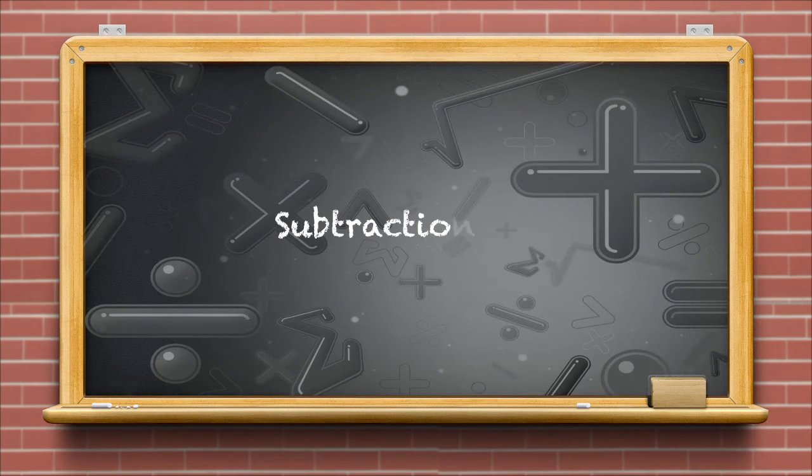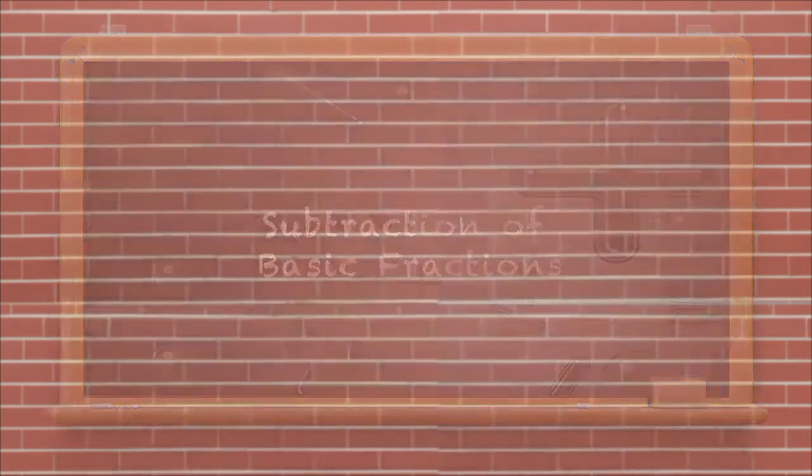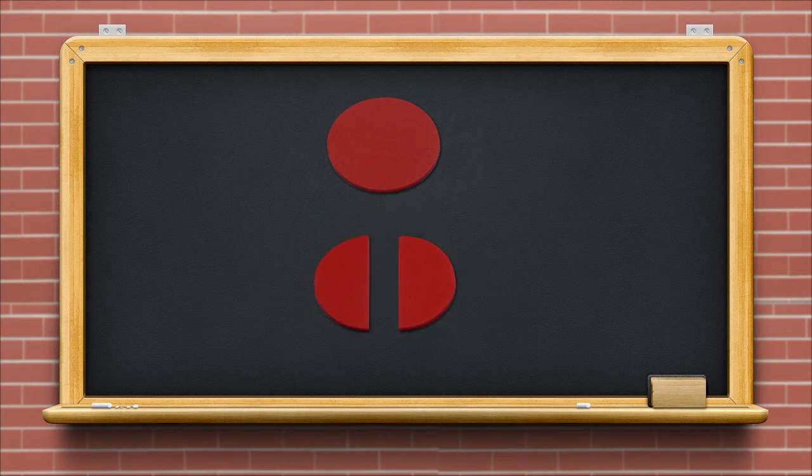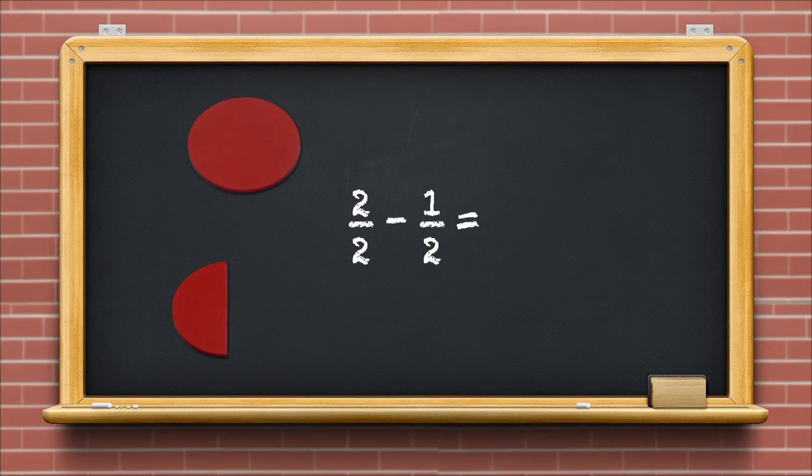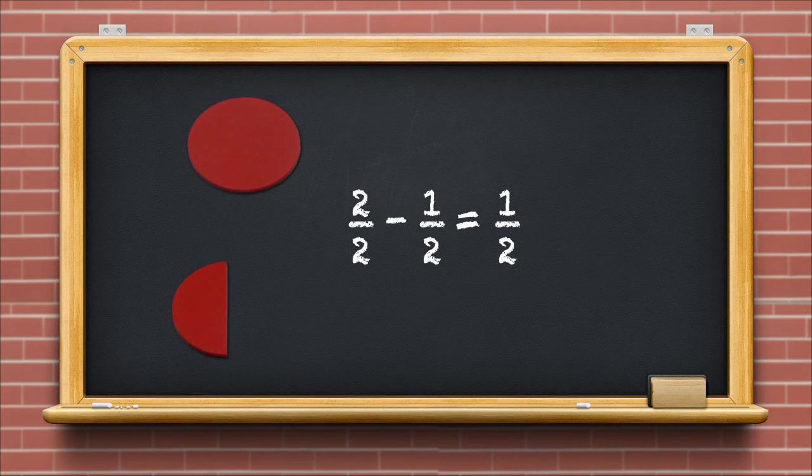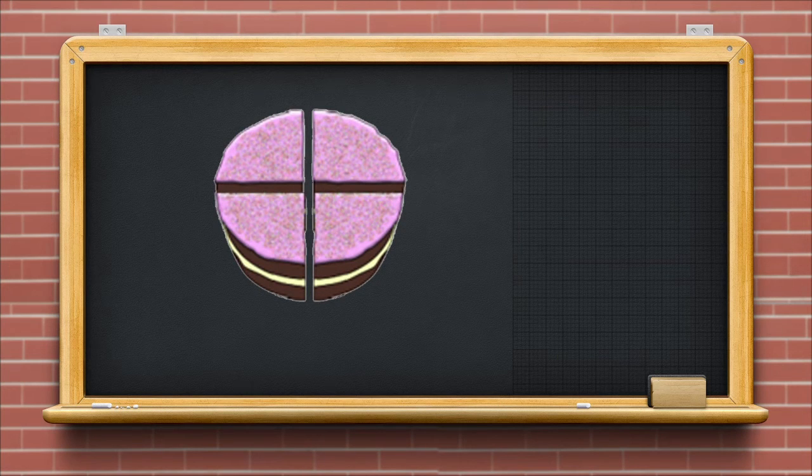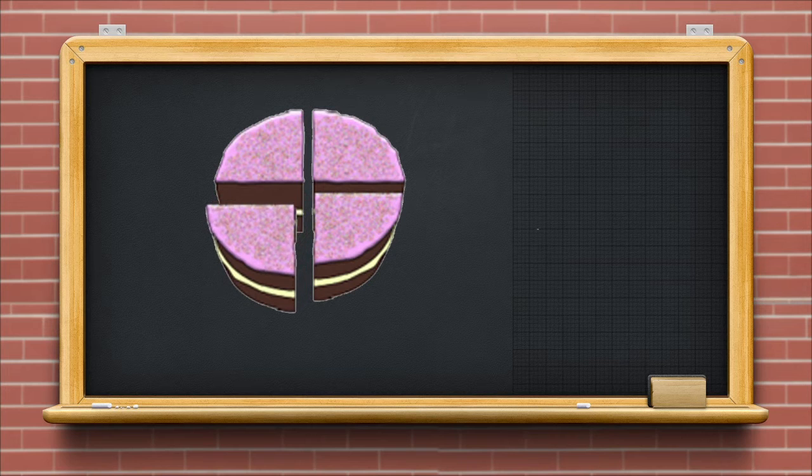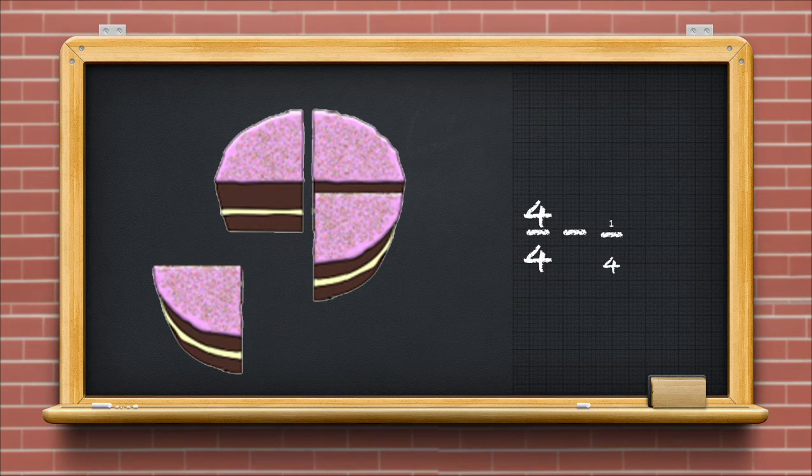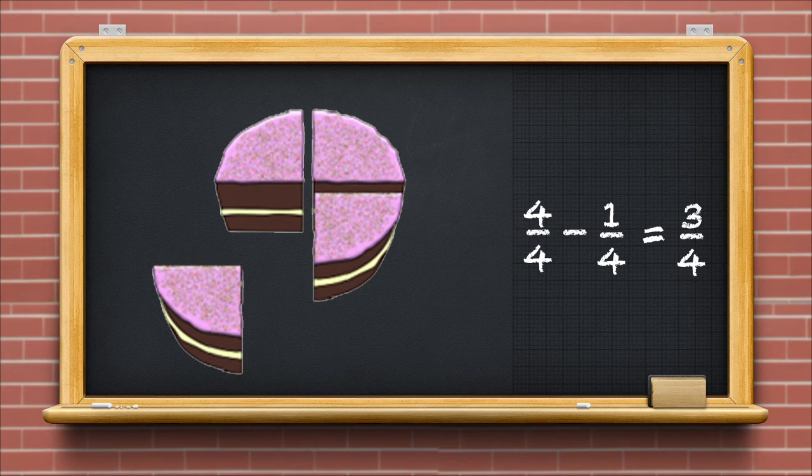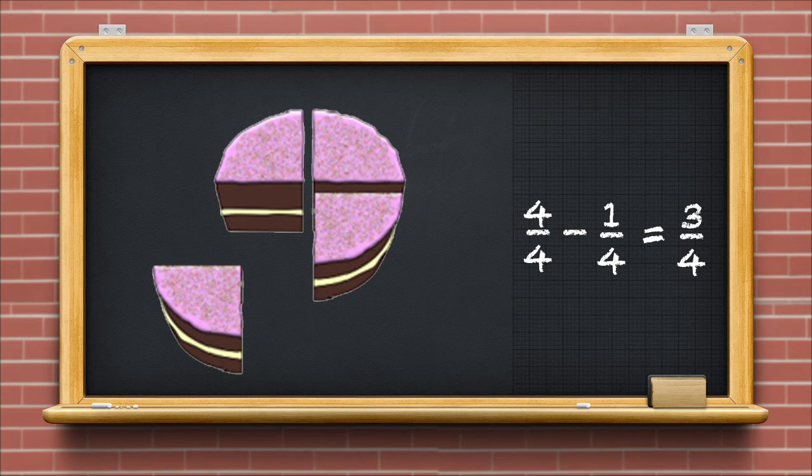Let us now move on to subtraction of basic fractions. Let us take a circle and divide it into two equal parts. If we were to remove one part from it, we are left with 1 upon 2, or half. We can also show subtraction using a cake. Let us cut the cake into 4 equal parts. If we remove one part from the 4 parts, then we are left with 3 parts, or 3 fourths of the cake. So, 4 upon 4 minus 1 upon 4 is equal to 3 upon 4.